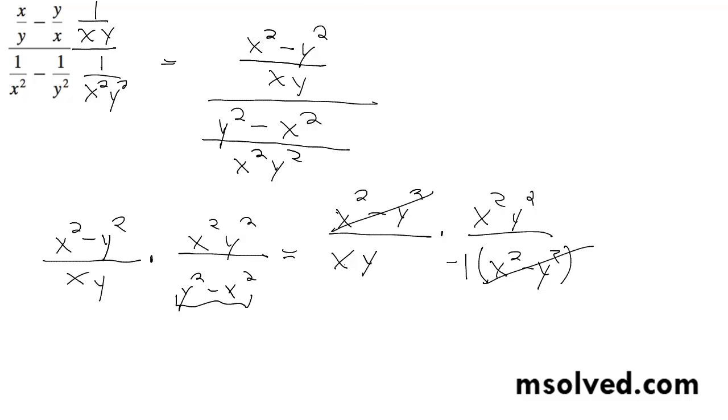These cancel out, so this makes these just a single one, and we're left with this over negative one, which is just negative x y. And that's it.